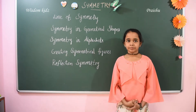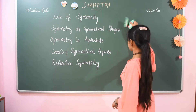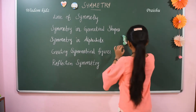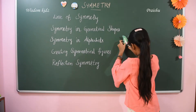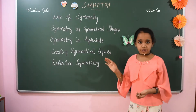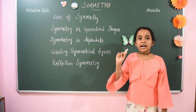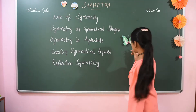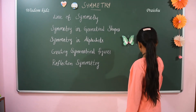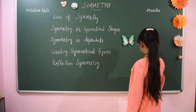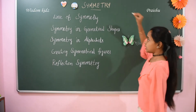The line of symmetry. The line which divides the figure into two identical halves is called the line of symmetry, or the axis of symmetry.